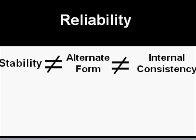Some people would say you have three types of reliability — they must all be the same. This is totally false. Each of those three reliability types stand on their own. Because something has alternate form reliability does not mean it has internal consistency, nor does it have stability reliability.